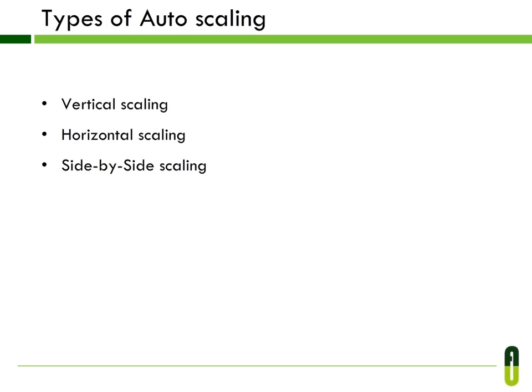The autoscaling and monitoring features of the Amazon EC2 services give you easy on-demand access to capabilities that once required complex system architecture and a hefty hardware investment. Here we have three types of autoscaling: vertical scaling, horizontal scaling, and side-by-side scaling.